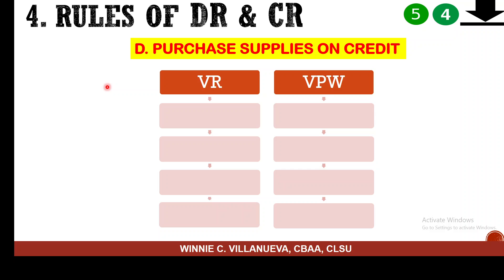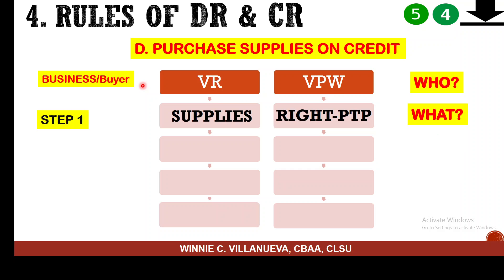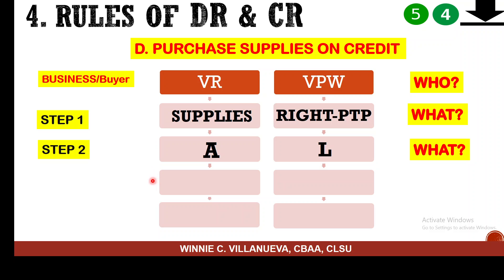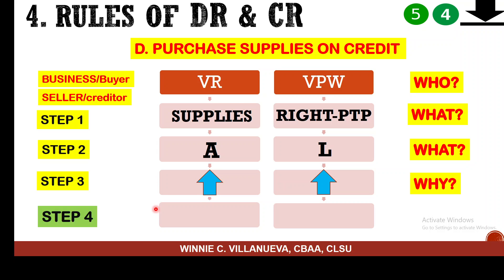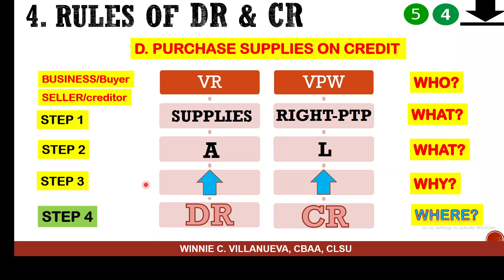The fourth sample: you purchase supplies on account — now you're the one going into debt. You receive the supplies but give a promise to pay, giving the creditor the right to collect from you. You have a liability. Asset and liability are both affected and both increase. When asset increases, it's debited; when liability increases, it's credited. You can skip steps 2 and 3 as long as you know what was received, what was given up, and the correct account names.